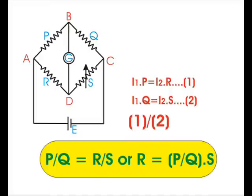Now, by dividing equation 1 and 2, we get P by Q is equal to R by S, or R equals P by Q into S, and say this is equation 3.